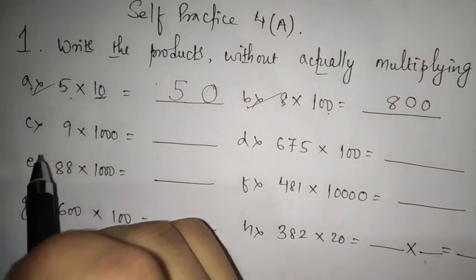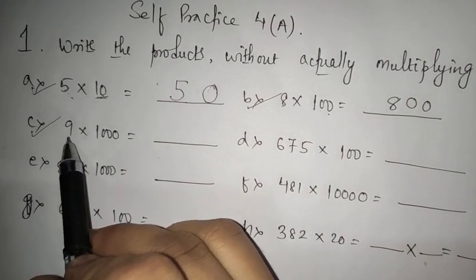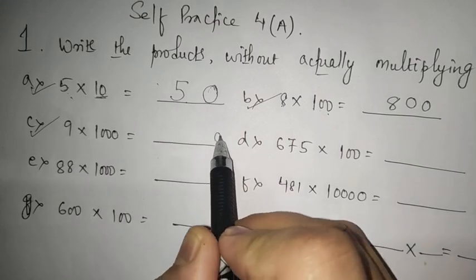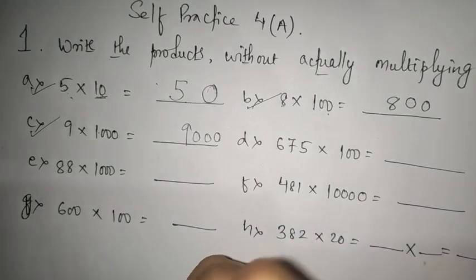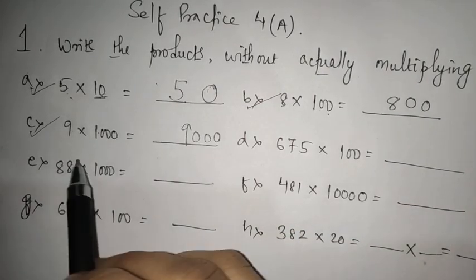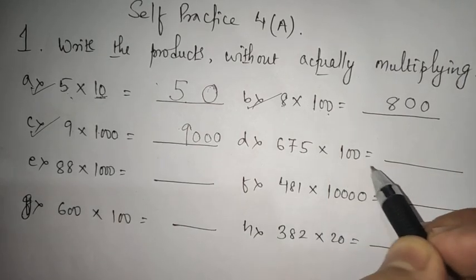Similarly, number C: when you have 1000 multiplying with any number, put three zeros on the right hand side first. Then 9 × 1 is 9. If you have the basic concept, you can directly write 9 × 1 is 9, then put three zeros.